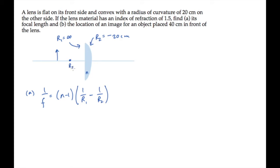We can substitute 1 over r1 equals 0 and solve for the focal length f, to find that it's minus r2 over n minus 1. Substituting values, we see that the lens has a focal length of 40 centimeters. It's positive, which means that this is a converging lens.